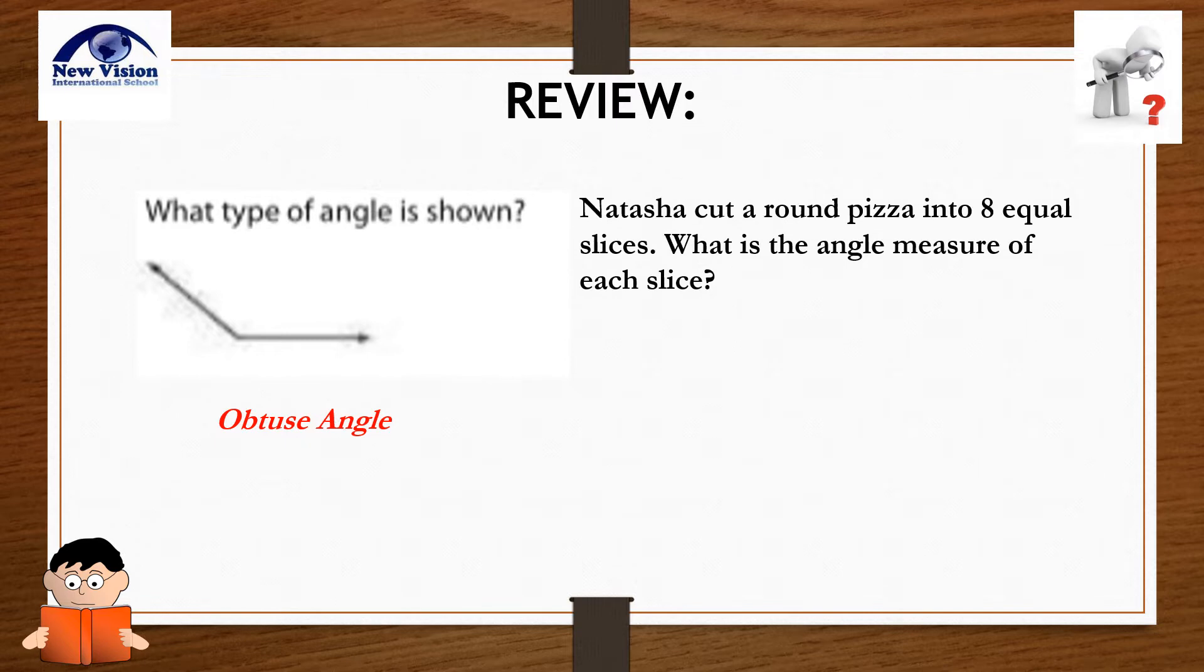Next, Natasha cut a round pizza into 8 equal slices. What is the angle measure of each slice? The answer is 45 degrees. And how did we get it? Each slice is 1 over 8 of the pizza, and 360 degrees divided by 8 equals 45 degrees.